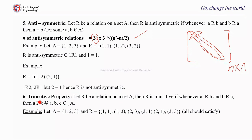The next property is the transitive property. Let R be a relation on set A. Then R is transitive if whenever A is related to B and B is related to C, then A should be related to C, for all A, B, C belonging to A.